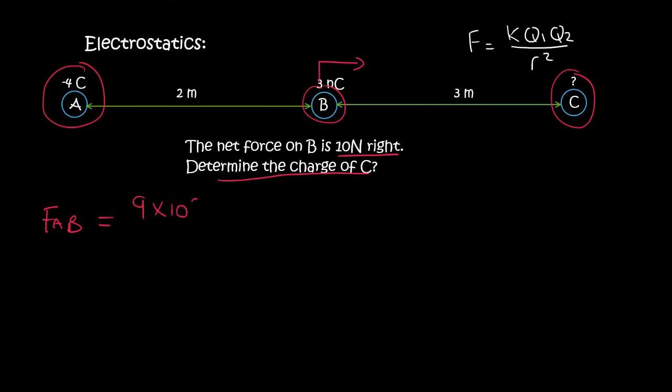So FAB equals K, which is 9 times 10 to the 9, times the charge which is 4 (we keep it positive), and B's charge is 3 times 10 to the minus 9. The distance between them is 2, so we say 2 squared, and we end up with 27 newtons.